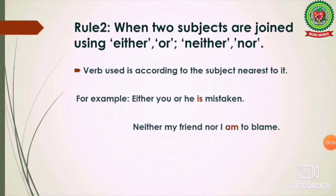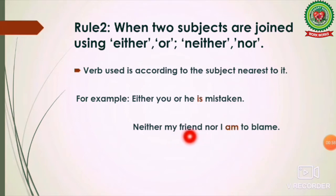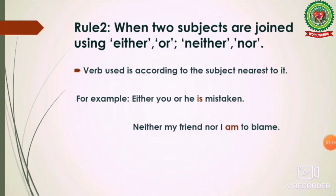'Neither my friend nor I am to blame.' In this sentence the first subject is 'my friend' and the second is 'I.' The verb is used according to the nearest subject, which is 'I,' so the verb 'am' is used: 'Neither my friend nor I am to blame.'